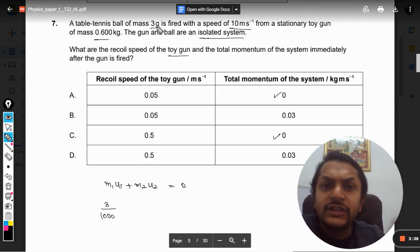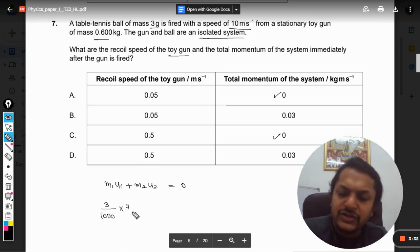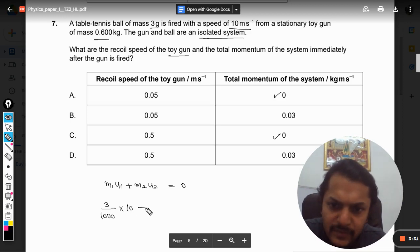Now we just substitute the values here and we make sure that all the units are from system international, that is SI. So 3 grams into u1, and the velocity is given as 10, plus the mass of the gun is 0.6 kg and u2 we need to find.